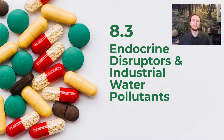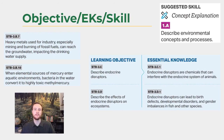Hey everybody, it's Mr. Smedes and welcome to APE's video notes for topic 8.3, which will cover endocrine disruptors and other industrial pollutants. Our objective for the day is to be able to describe endocrine disruptors, identify their sources, and talk about their environmental and human health impacts. The skill we'll practice at the end of today's video is describing an environmental concept.